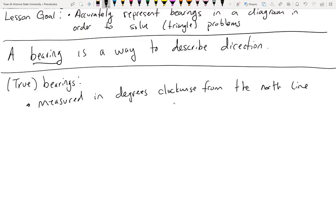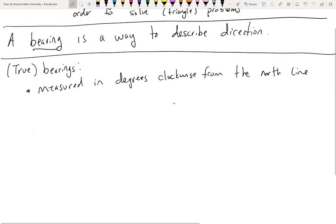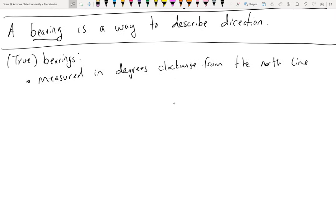These types of bearings are measured in degrees clockwise from the north line — always. It doesn't matter where the object is. These true bearings are the measure of rotation from the north line, clockwise rotation.